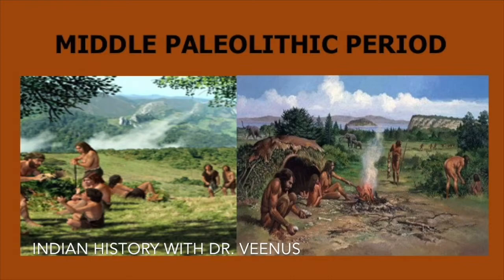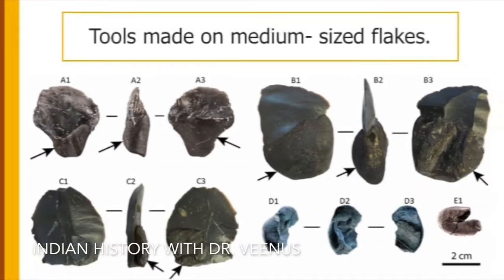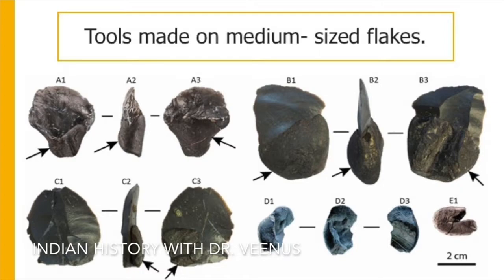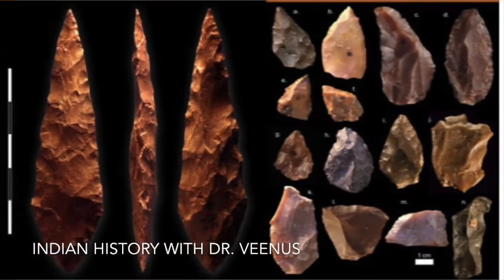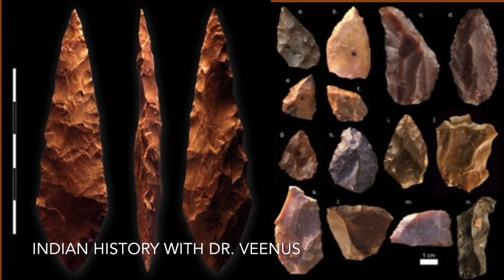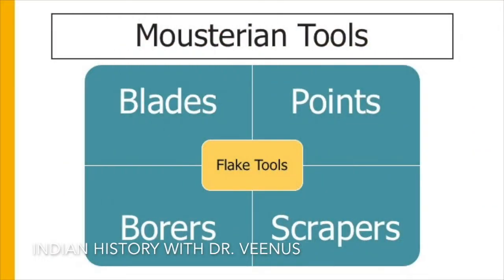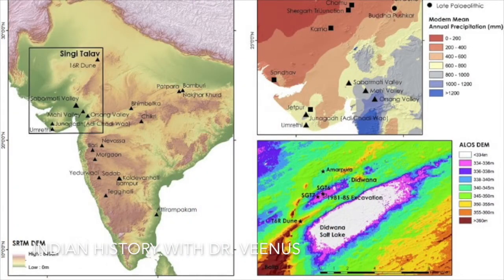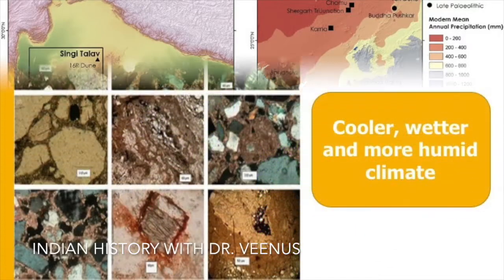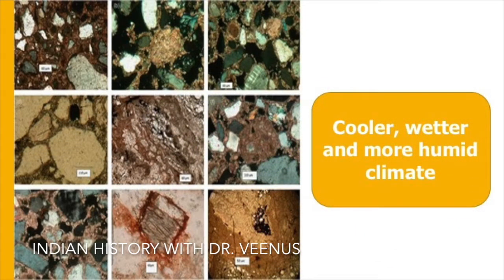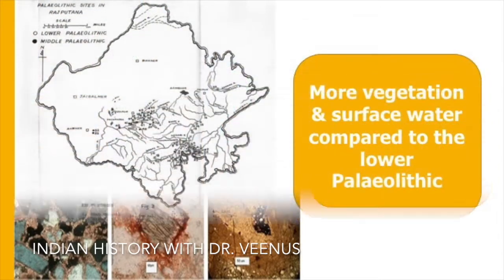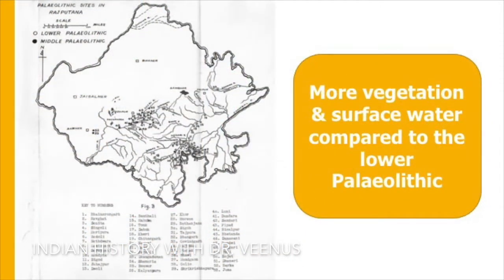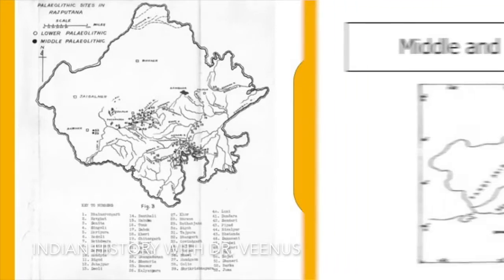Technologically, the Middle Paleolithic period was characterized by tools made of medium-sized flakes. The assemblage now comprised of tools thinner and smaller than those of the Lower Paleolithic, and included a variety of scrapers, borers and points. The occurrence of Middle Paleolithic artifacts in reddish-brown soil in the Thar region indicates a cooler, wetter and more humid climate with more abundant vegetation and more surface water compared to the Lower Paleolithic.